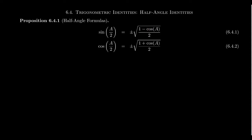So where do these half-angle identities come from? Let's consider the derivation of the half-angle identity for sine. We're going to use the double-angle identity for cosine — specifically the version that only involves sine: cosine of 2x equals 1 minus 2 sine squared of x. We're going to solve for sine here.